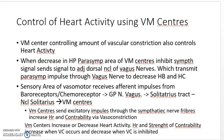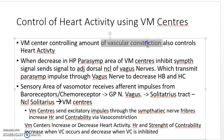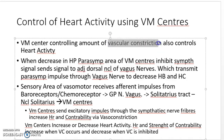The vasomotor receptors are located bilaterally in the middle of the lower pons of the brainstem. These vasoreceptors are connected with the baroreceptors and chemoreceptors. The vasomotor centers control two main things: vascular constriction and heart rate activity.